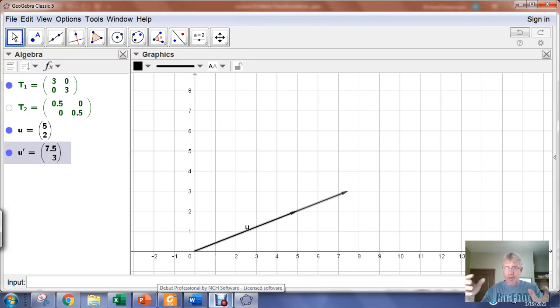So putting them in the matrix format lets you compose or do multiple transformations at the same time. Dilation increases the size of the vector but not the direction. Contraction decreases the length of the vector but not the direction in which it points.